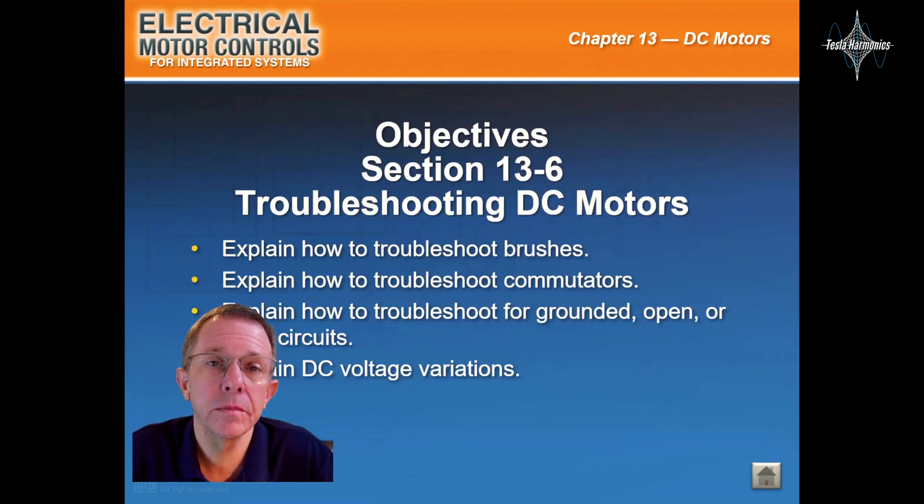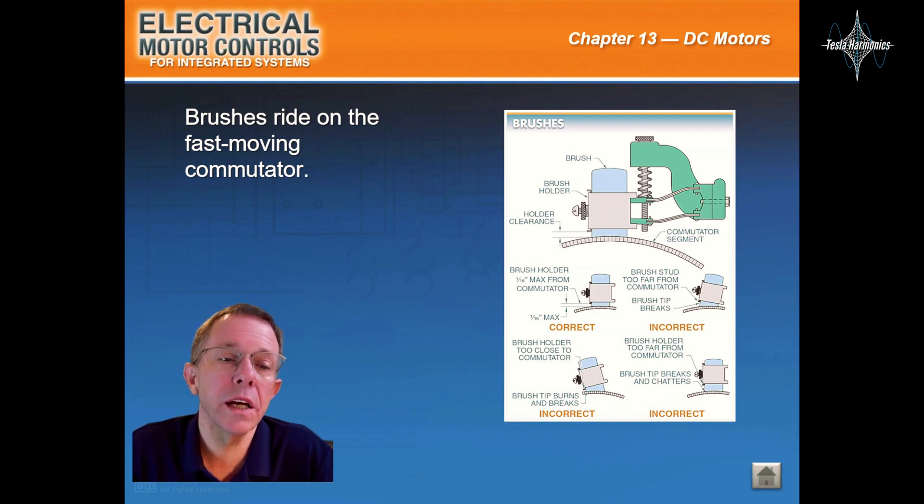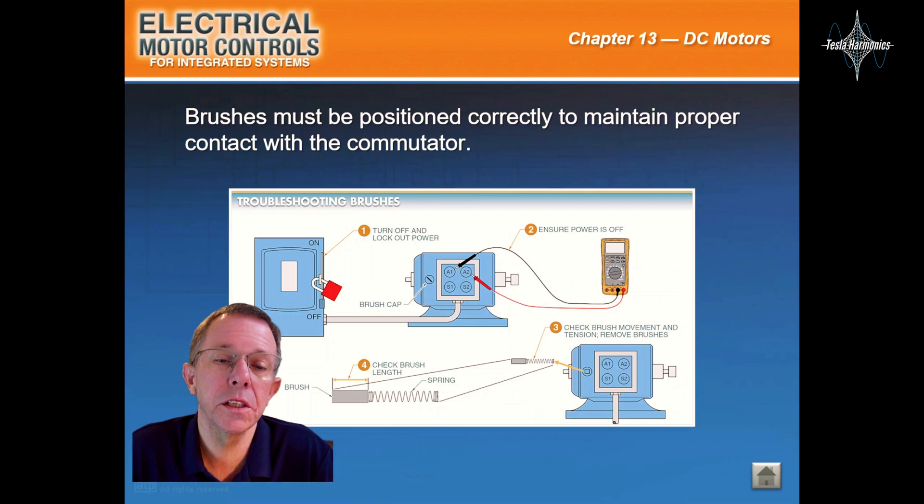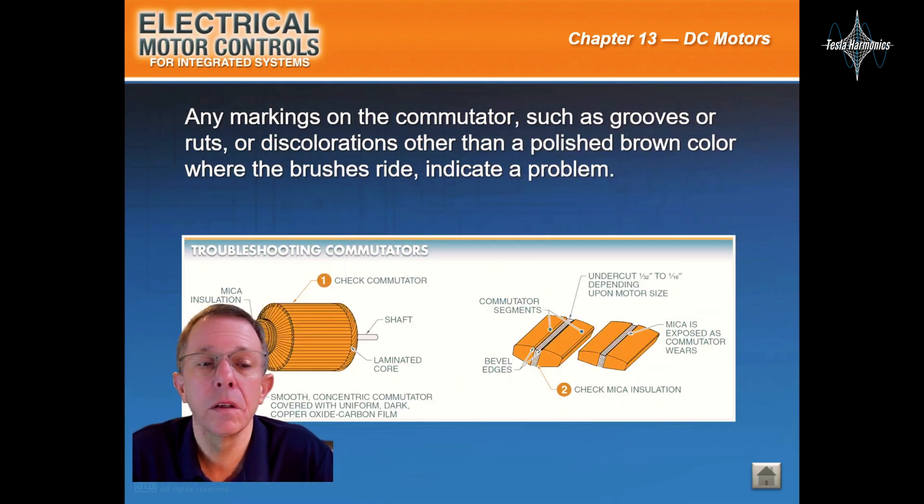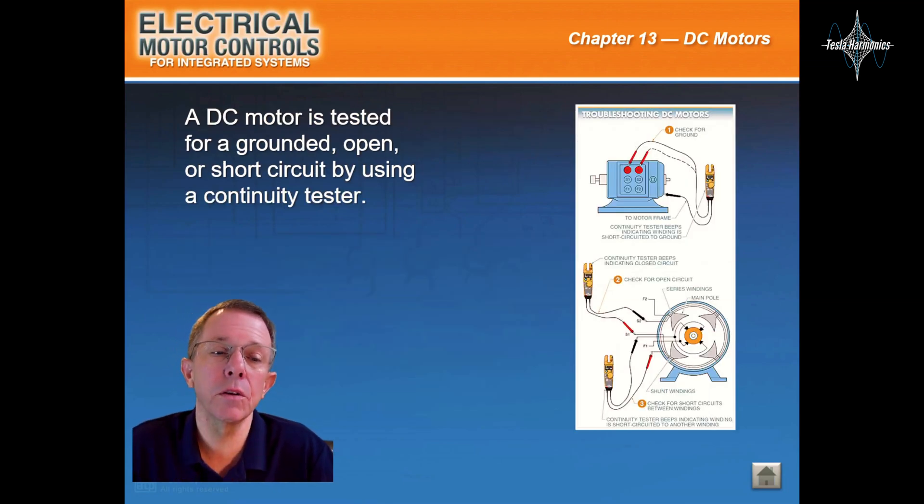Troubleshooting DC motors: Brushes ride on the fast moving commutator. Brushes must be positioned correctly to maintain proper contact with the commutator. Any markings on the commutator such as grooves or ruts or discolorations other than a polished brown color where the brushes ride indicate a problem. A DC motor is tested for a grounded, open, or short circuit by using a continuity tester.